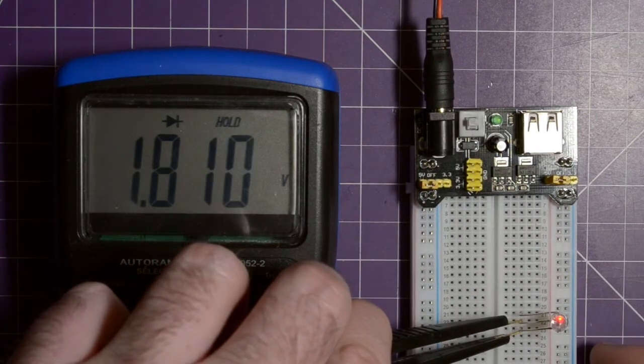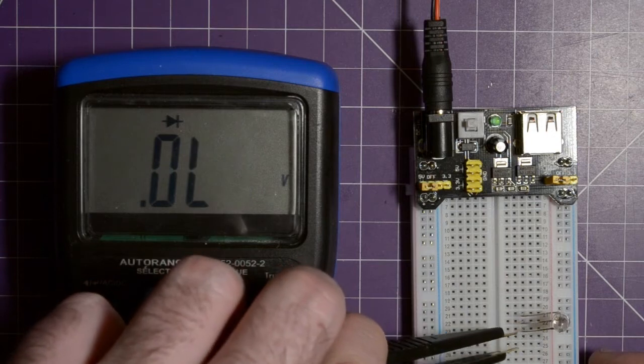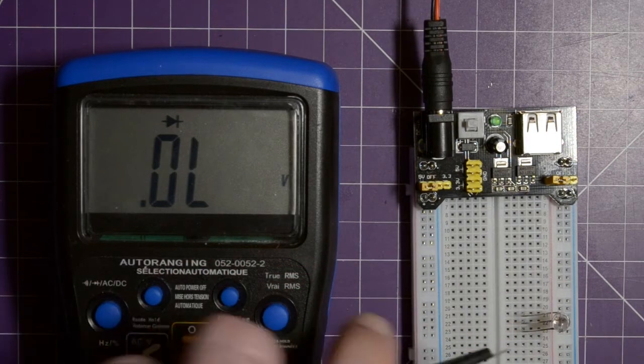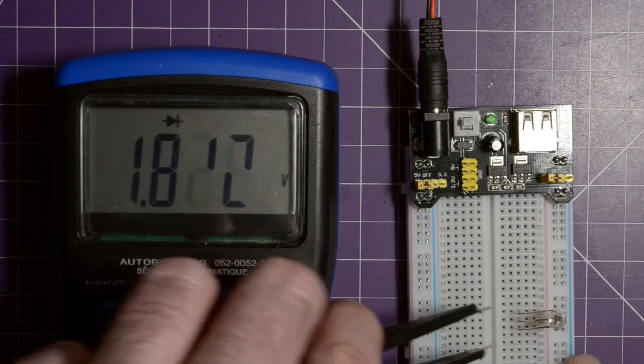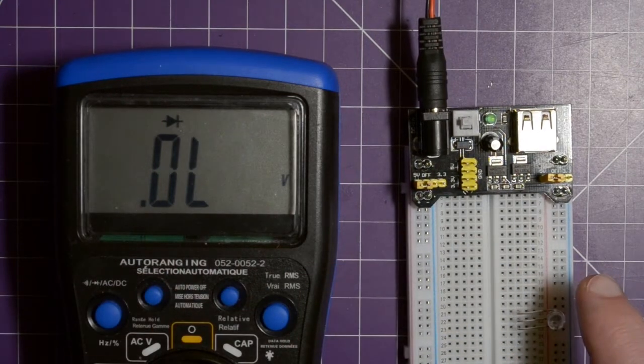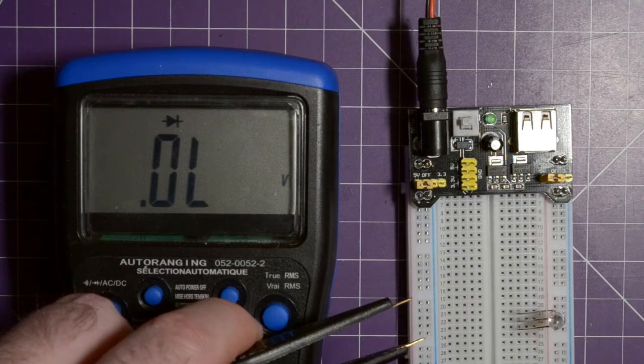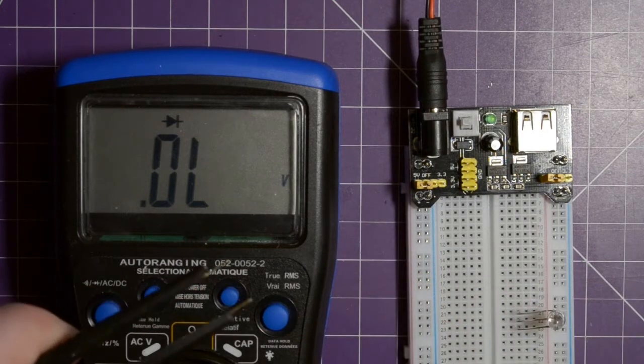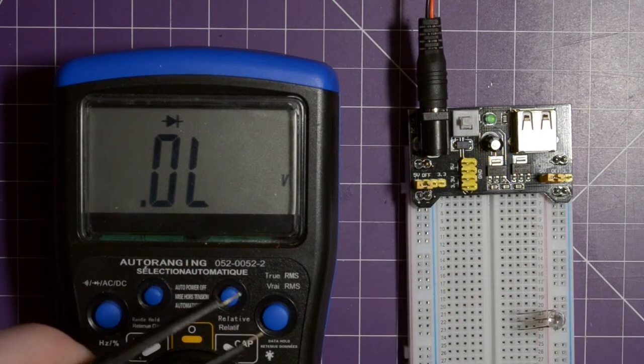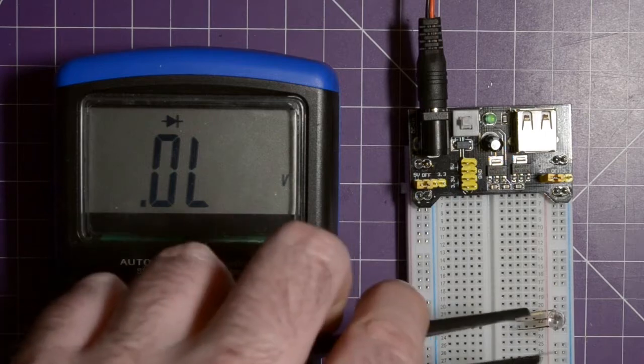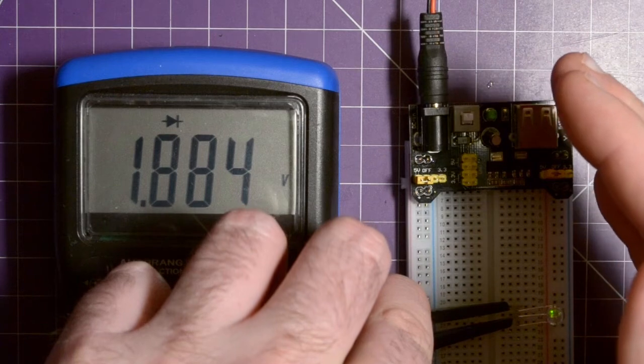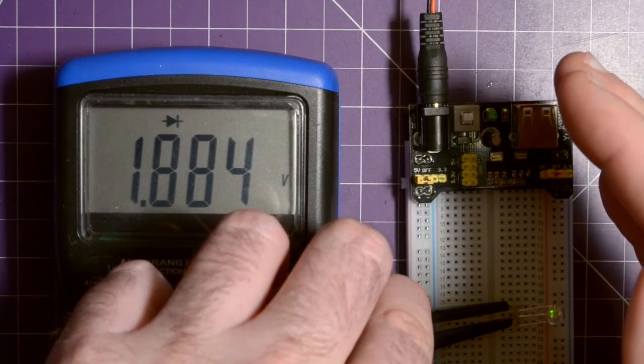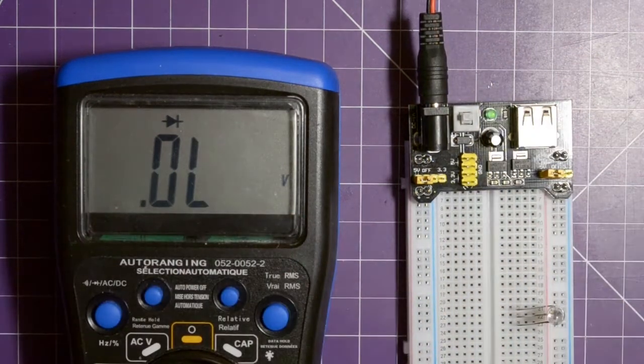Hit hold by accident there. There we go, 1.8 volts. And the green one should be just a little bit more, but I'm not sure if the battery capability in here is enough to turn it on very bright. So let's take a look here. It is on very, very faintly, almost 1.9 volts.